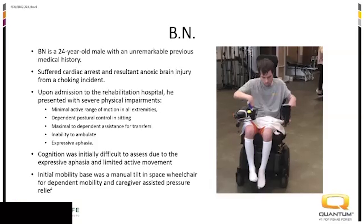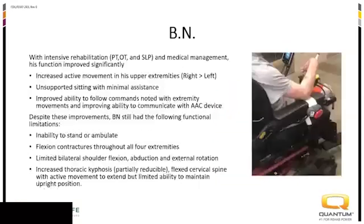He had very minimal range of motion in all extremities, was dependent for bowel and bladder, max dependent for transfers, unable to ambulate, and was not able to verbalize or communicate much at all. It was difficult to assess his cognition basically due to his very severe physical limitations. His initial mobility was a manual tilt-in-space wheelchair for gravity-assisted positioning with maximal postural support from headrest, lateral supports, positioning, and skin protection cushion.